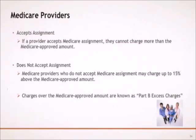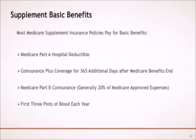Medicare providers who accept Medicare Assignment cannot charge more than the Medicare-approved amount. However, providers who do not accept Medicare Assignment may charge up to 15% above the Medicare-approved amount. These excess charges are referred to as Part B Excess Charges.